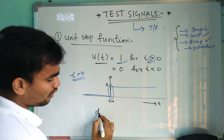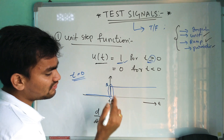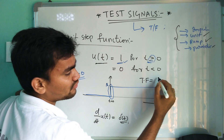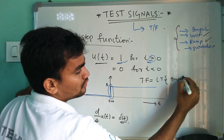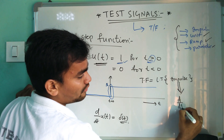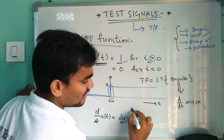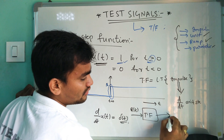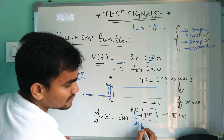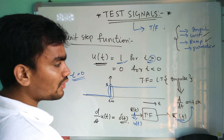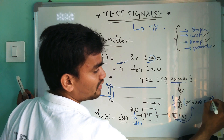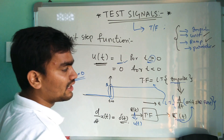The derivative of the unit step function with respect to t gives the impulse function. From the derivation done earlier, you can write the transfer function as the Laplace transform of the impulse response. So if the unit step response is given, that is u(t), then instead of the impulse response you can write it as the derivative of the unit step response. If you differentiate the unit step response d/dt and take the Laplace transform, you can directly obtain the transfer function of the system.